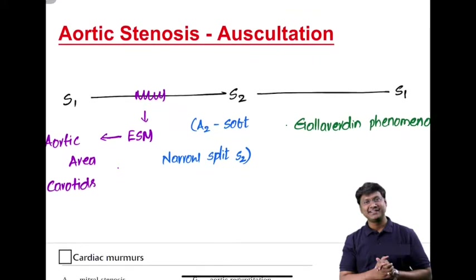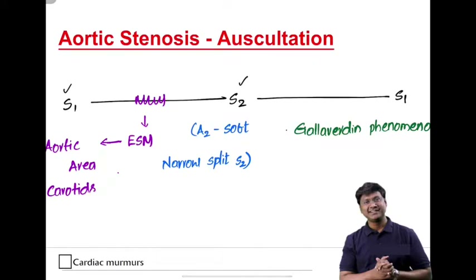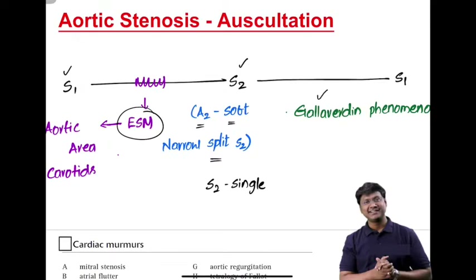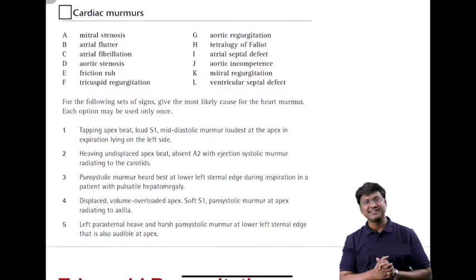Auscultatory findings in aortic stenosis: S1 is normal, A2 is soft or absent with a narrow split S2; in very severe cases S2 may be single. The murmur is a harsh ejection systolic murmur heard in the aortic area, radiating to the carotids. The Gallavardin phenomenon refers to the murmur of aortic stenosis radiating to the apex.